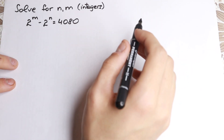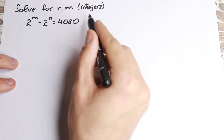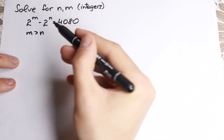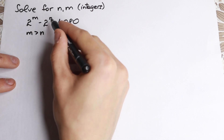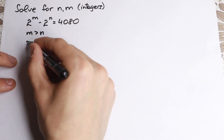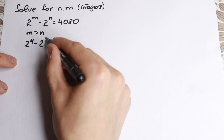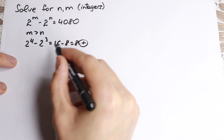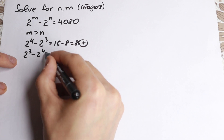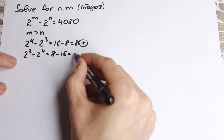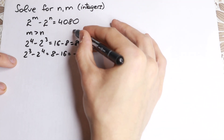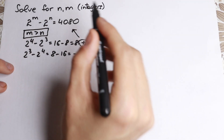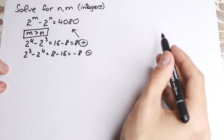First of all I want to mention one really interesting moment. So right here we have a positive value — 4080 — and as a result m is greater than n. For example, 2 to the fourth minus 2 cubed gives 16 minus 8, which is positive. But 2 cubed minus 2 to the fourth gives 8 minus 16, which is negative. In our case we have a positive expression on the right-hand side, so m is greater than n. This is the first really interesting moment.